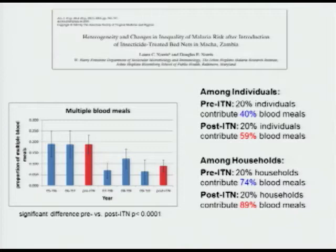What she was also able to illustrate quite clearly is that there's a lot of heterogeneity. Before bed nets, we knew that about 20% of the population was contributing about 40% of the blood meals — from those genetic markers we were using. But after bed nets were in place, that same 20% are now contributing 60% of the blood meals.